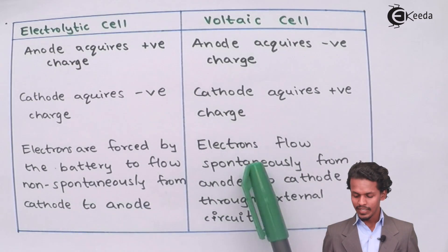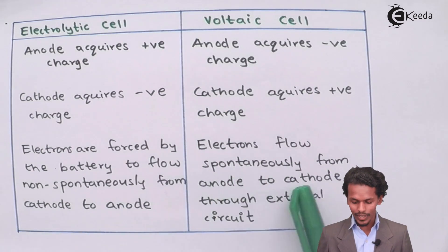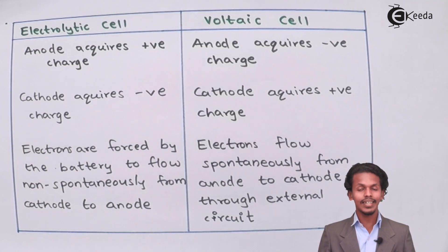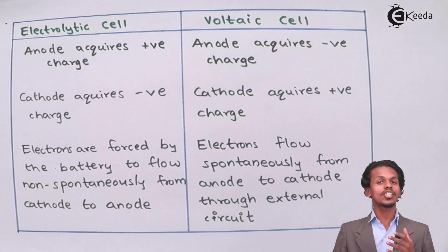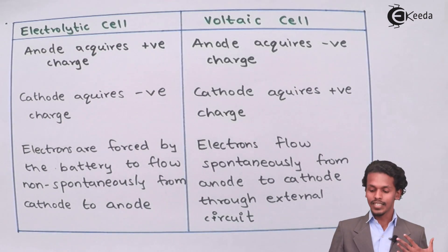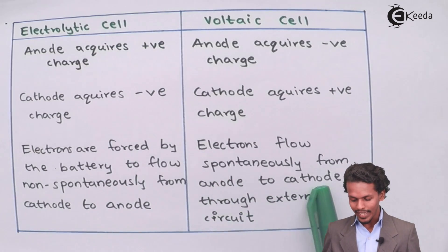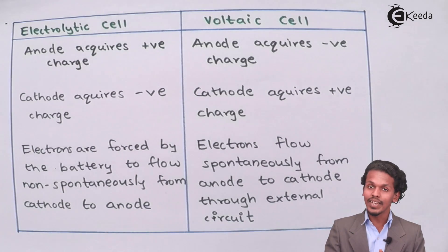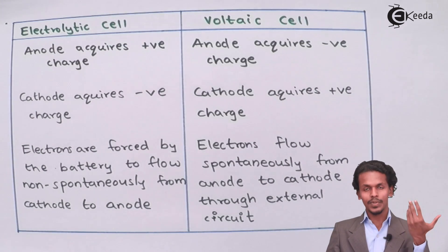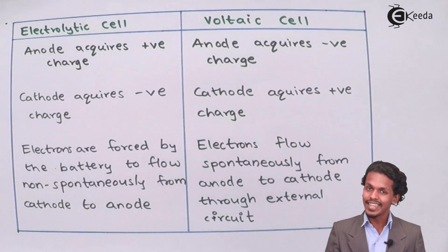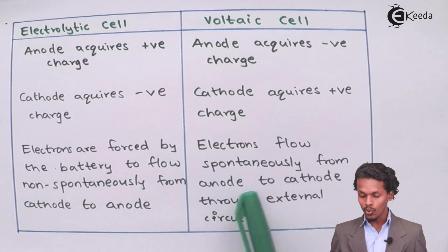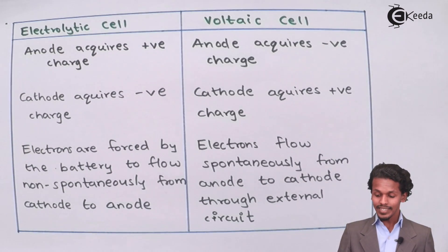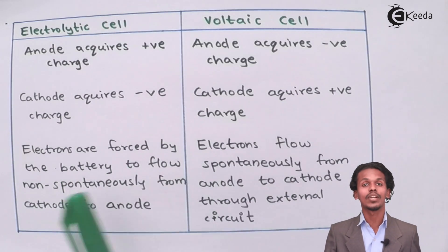In the voltaic cell, electrons flow spontaneously from anode to cathode through the external circuit. The overall reaction is a spontaneous, natural process and cannot be stopped until the electrodes are removed. The reactant species react with respect to their electrodes, generating electricity from anode to cathode, leading to a current that can be measured.